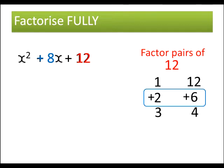So, this is where this method starts to be different. What I'm going to do is I'm going to split this 8x into a 2x and a 6x like this. So, I've rewritten this expression, but instead of writing 8x, I've written a positive 2 and a positive 6, because they are the factor pairs that I can make it with.